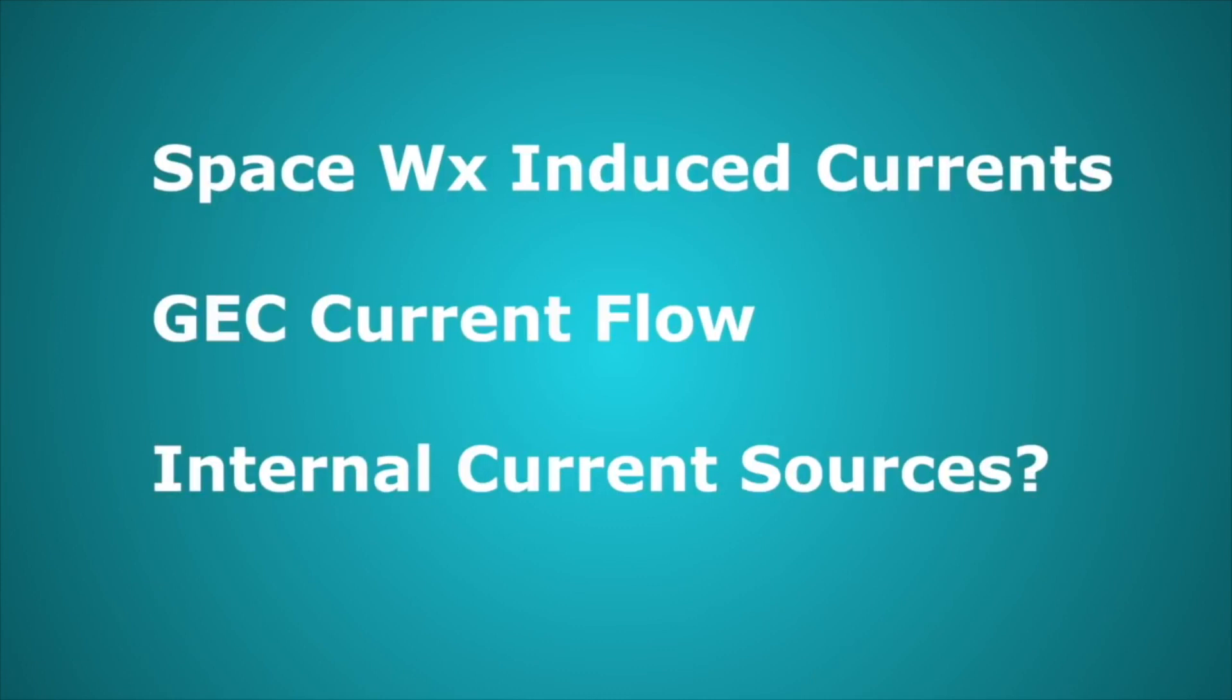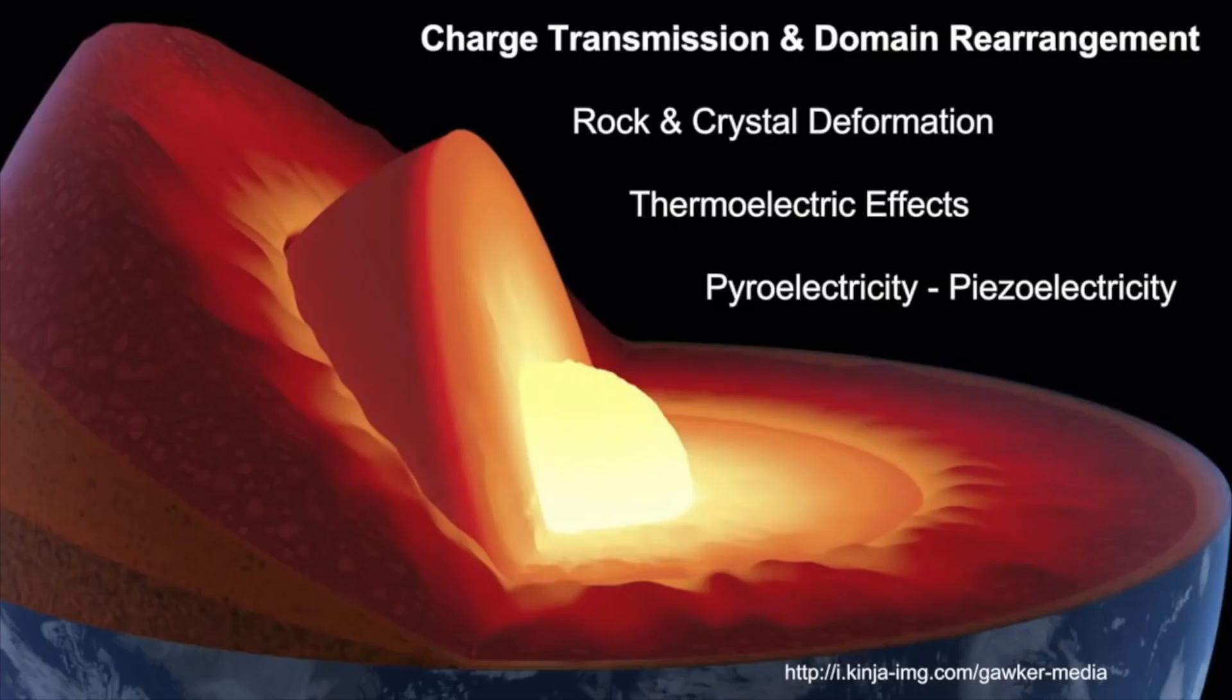So just to quickly go over what we talked about there, we have the space-weather-induced currents, and a lot of that does include the telluric currents. We have the global electric circuit flow down and up, high pressure, low pressure. But what about internal sources? Something that didn't come from the sun, something that wasn't part of Earth's global electric circuit? We've got even more sources of electricity here.